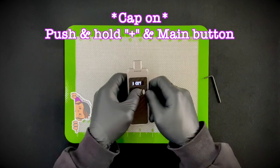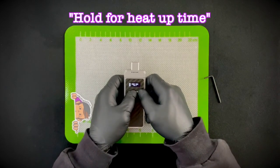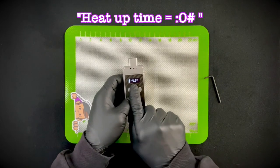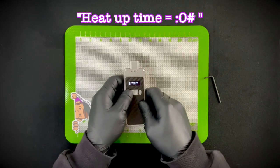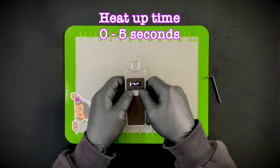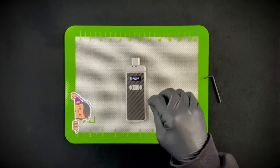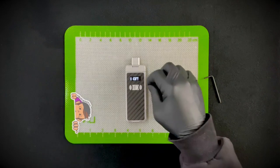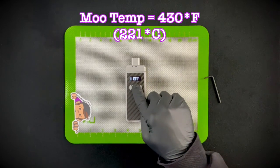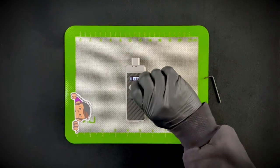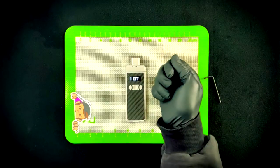And that's with your cap on, you're going to push and hold the plus button and the fire button at the same time, and it will say hold for heat up time. And if you keep holding, it'll say heat up time and give you a second count, and you can adjust that between zero to five seconds. Now what this does is basically when you put your dab in there and you're going to heat up to this 430 degrees, instead of just a light switch going from zero to 430, what it's going to do is it's going to slowly increase the temperature up.